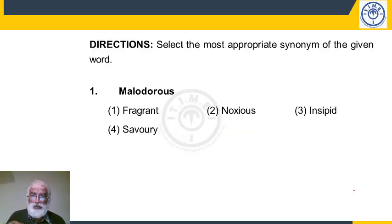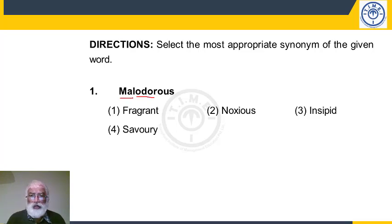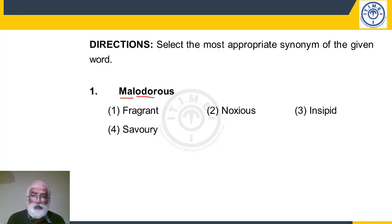The first question looks at synonyms of words. The word given is malodorous. If you pay attention to it, even if you hadn't seen the word before, you can identify 'odor' meaning smell, and the prefix 'mal' normally means bad. So malodorous means something having a bad smell — an adjective for something with a bad smell. We want a synonym for that. Fragrant means pleasant smell, and insipid means something without smell at all.